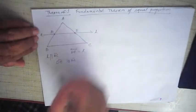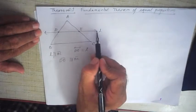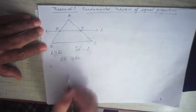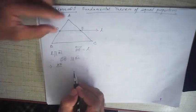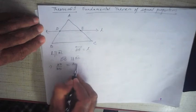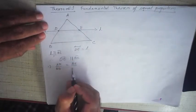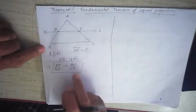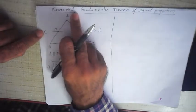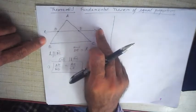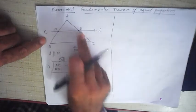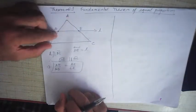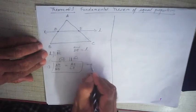In triangle ABC, if a line L is parallel to one side of a triangle, intersecting the other two sides in two distinct points, then we want to prove that AD/BD = AE/EC. This is what we want to prove — that the sides cut off are in equal proportion. All this setup is given to us.